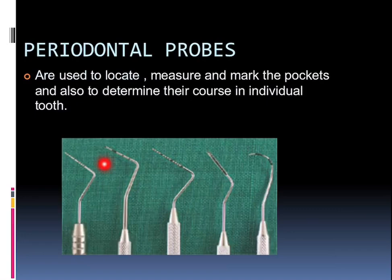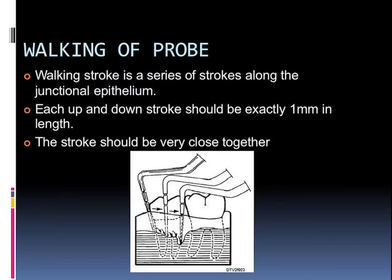Talking about periodontal probes, which are used to locate, measure, and mark pockets and also to determine the course of pockets in various individuals. From the pockets we can also diagnose furcation involvement with the help of the Nabers probe. The wave walking of a probe is a series of strokes along the junctional epithelium — how we walk the probe to know about defects or the depth of the pocket. Each up-and-down stroke should be exactly 1 mm in length and strokes should be very close together so we can know the exact depth of the defect.